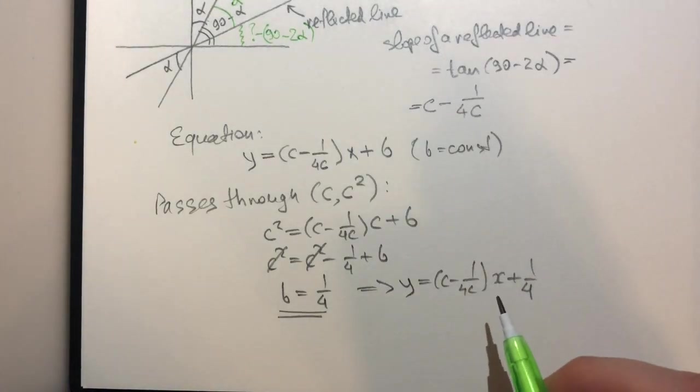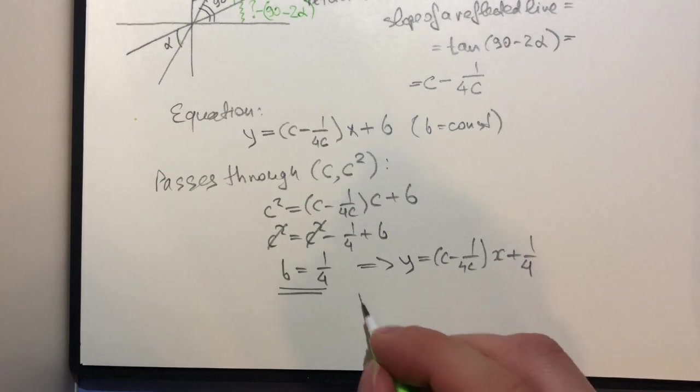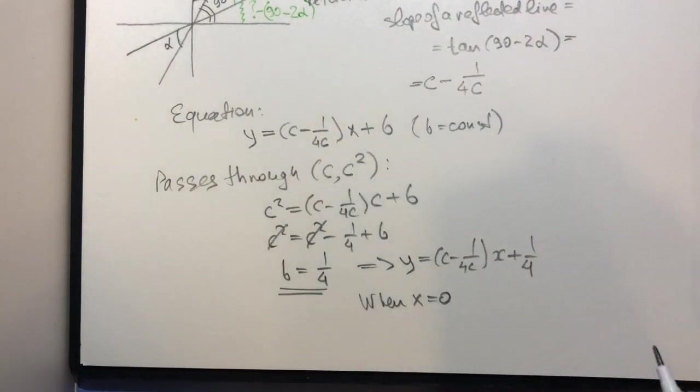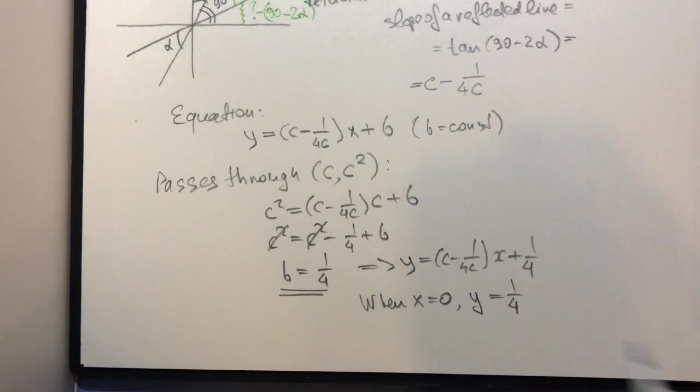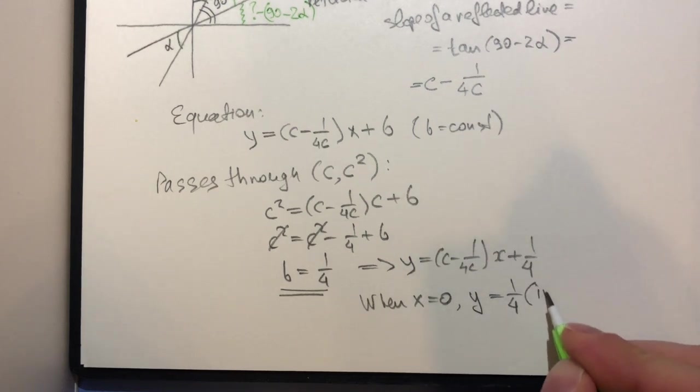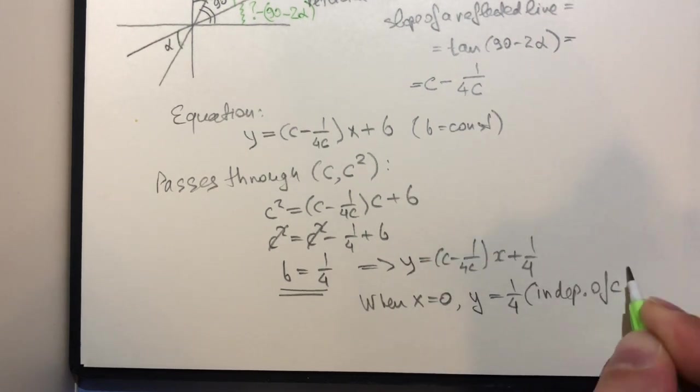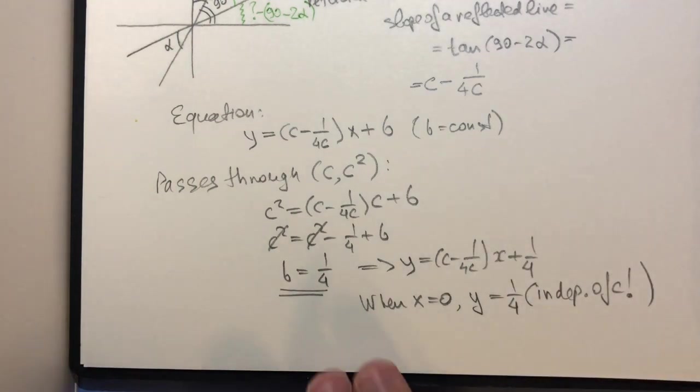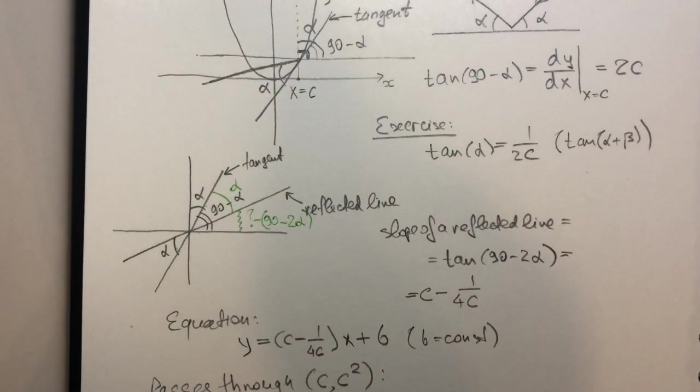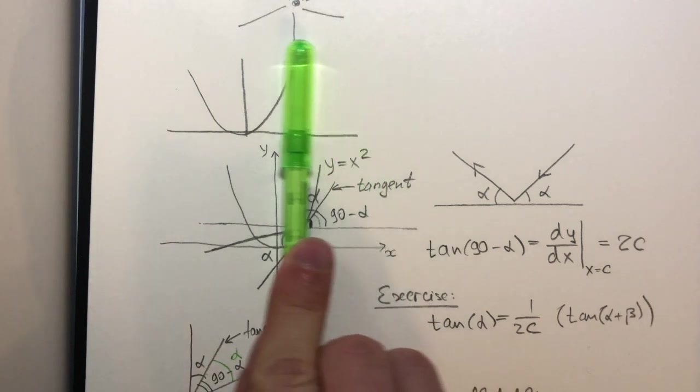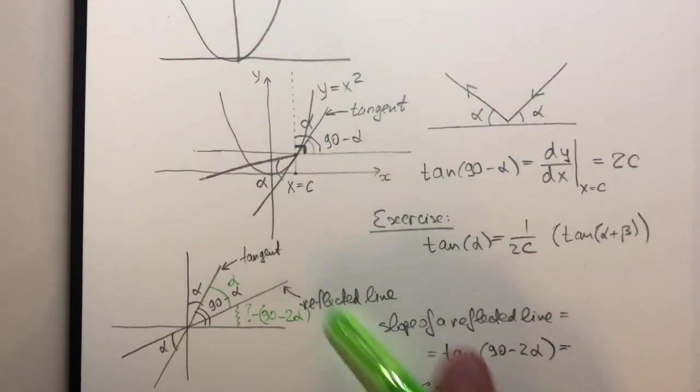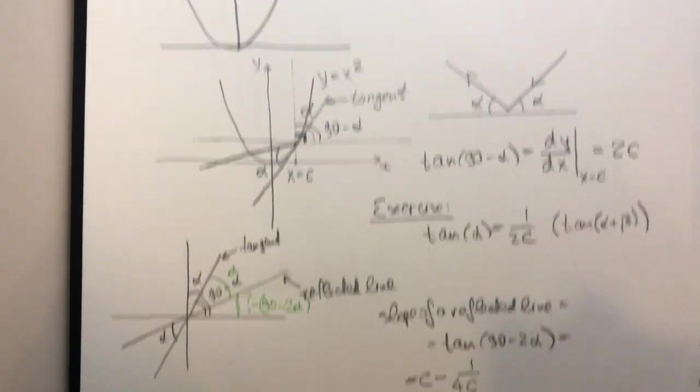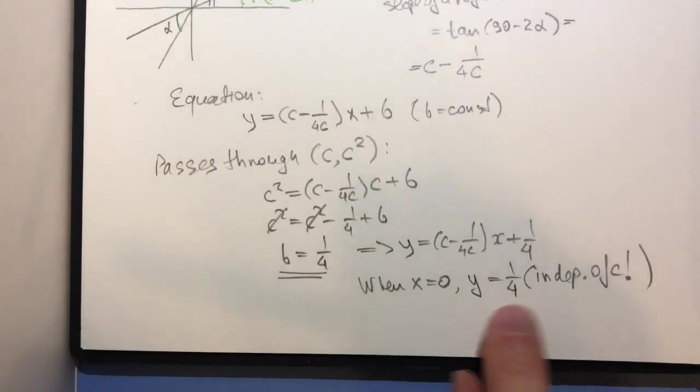Now, here is what we should observe. That when x is equal to 0, y is equal to a quarter. Why is this peculiar? Well, because it is independent of c, right? So that means that I could have chosen a different vertical line, conduct the same procedure here for some other c, and I would still get a quarter.